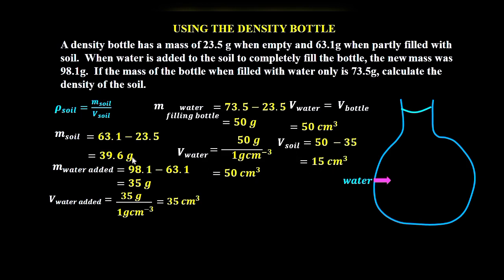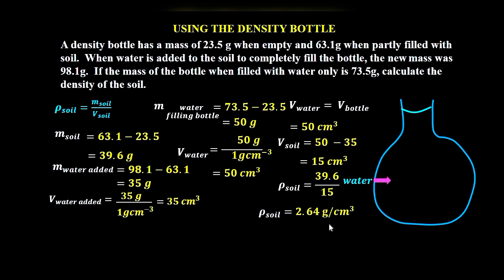Finally, using the formula: density of soil equals mass of soil over volume of soil. Mass of soil is 39.6 grams and volume of soil is 15 cubic centimeters. Dividing gives the density of soil as 2.64 grams per cubic centimeter. That is how we solve this question. Thank you for watching — hope to see you in the next video.